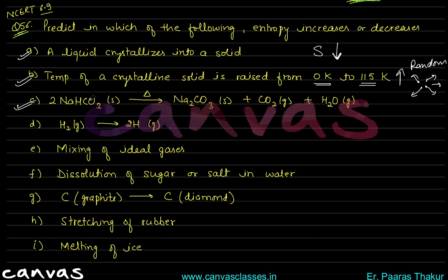Third case: 2 NaHCO₃ solid decomposes — 2 moles of solid reactant yields 1 mole solid plus 1 mole H₂O plus two moles of gases (CO₂). In the reactant there was only solid, but in the product we have solid plus two moles of gases. The entropy will increase because gases have much more disorder.